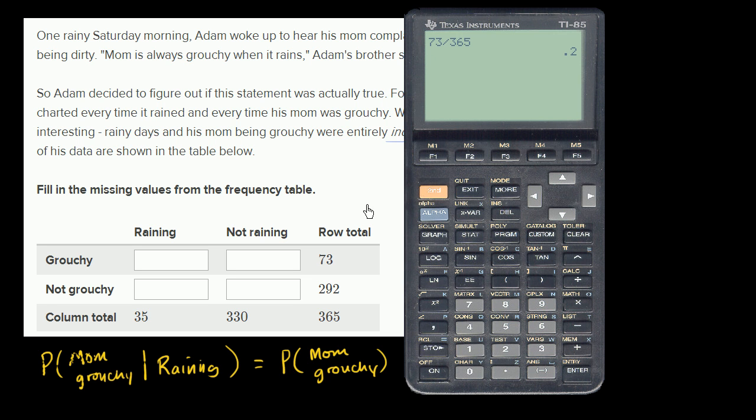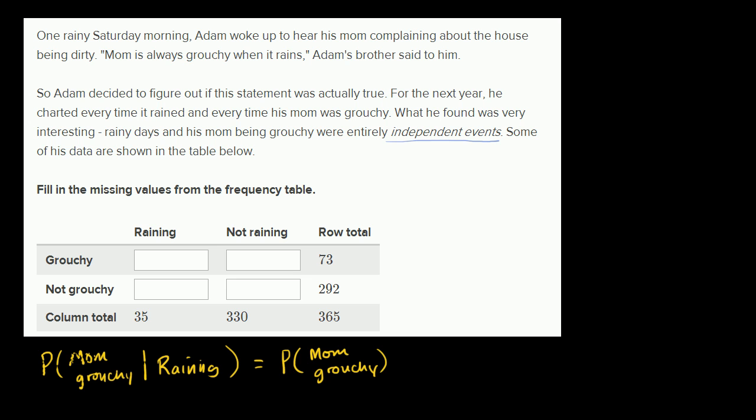So that is 0.2. So based on the data, the best estimate of the probability of mom being grouchy is 0.2, or 20%. And so we should have the probability of mom being grouchy given that it's raining should be 20% as well. So given that it's raining, we should also have 20% of the time mom is grouchy, because these are independent events. It shouldn't matter whether it's raining or not. She should be grouchy 20% of the time that it's raining, and she should be grouchy 20% of the time that it's not raining. That would be consistent with the data saying that these were entirely independent events.